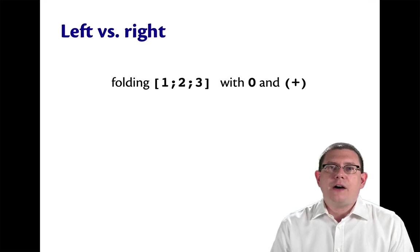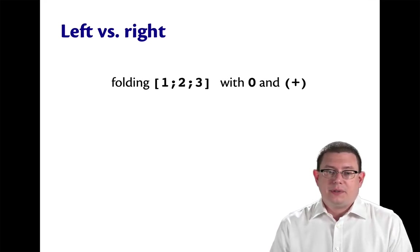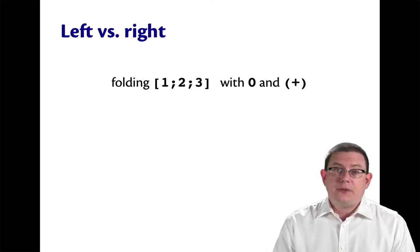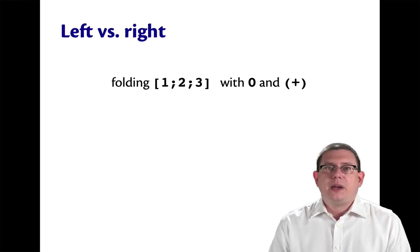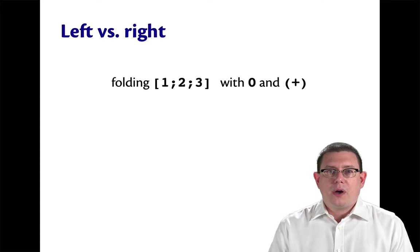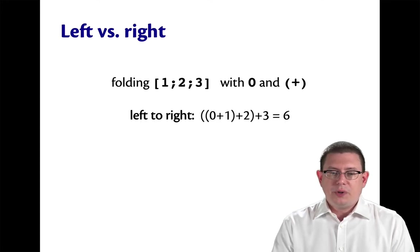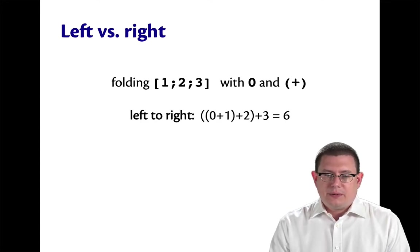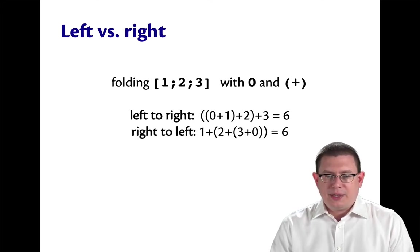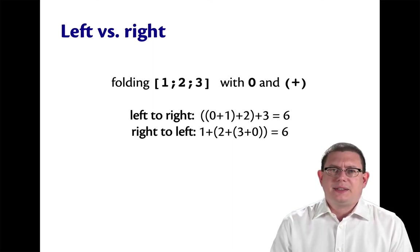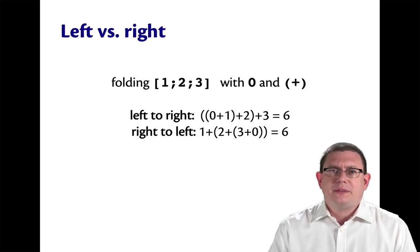You might wonder, why have both a fold left and a fold right? Does it really make a difference? After all, if you think about folding the list one, two, three together with the initial value zero and the operation plus, what do you get if you go left to right? Well, you add them all up and you get six. What do you get if you go right to left? You add them all up and you get six. So there's no difference there. Why bother?